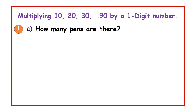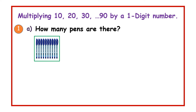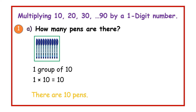In number one, part A, let us find out how many pens there are. We can see that there is only one group of 10 pens. So one group of 10 — that is 1 times 10, which is equal to 10. So there are 10 pens altogether.